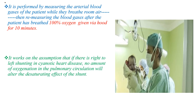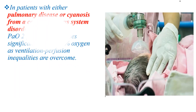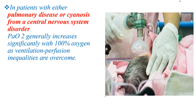It works on the assumption that if there is right-to-left shunting in cyanotic heart disease, no amount of oxygenation in the pulmonary circulation will alter the desaturation effect of the shunt. In patients with pulmonary disease or cyanosis from a central nervous system disorder, the partial pressure of oxygen generally increases significantly with 100% oxygen as ventilation-perfusion inequalities are overcome.